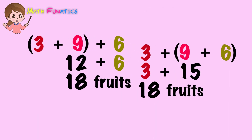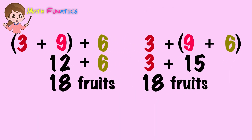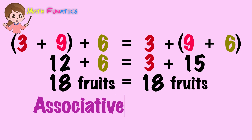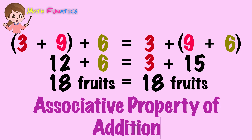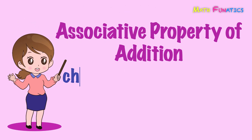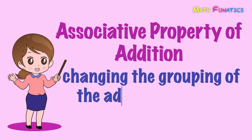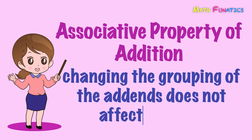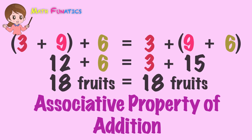Numbers may be added in any way of grouping. This means even if we change the grouping of the addends, the answer will still be the same. This property is called the associative property of addition. It states that changing the grouping of the addends does not affect the sum.